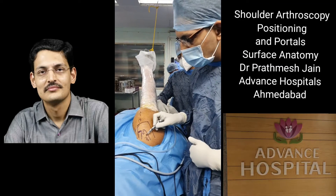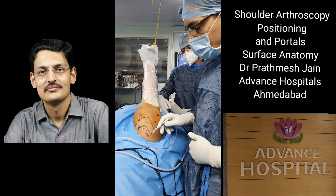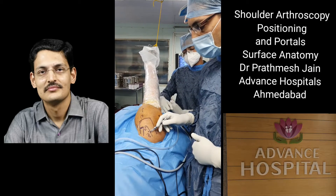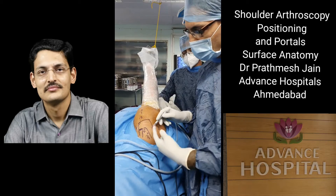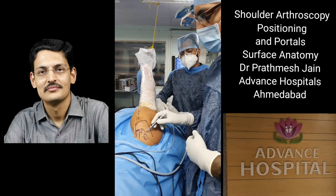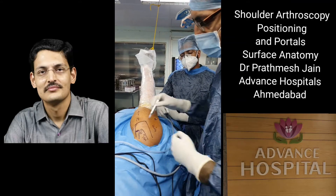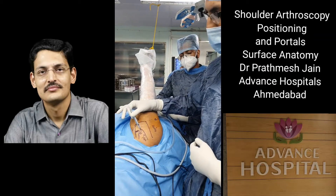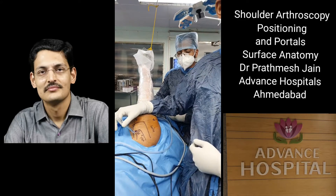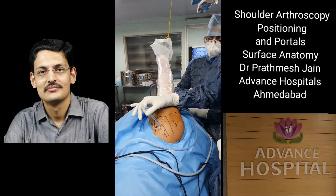The modified Neviaser portal is very good if you want to do rotator cuff repairs with penetrating devices. You can use a 15- or 20-degree penetrator to pass sutures through the supraspinatus tendon through this portal. The Neviaser portal is also a very good portal for suprascapular nerve release in this area, making it a very important portal overall.